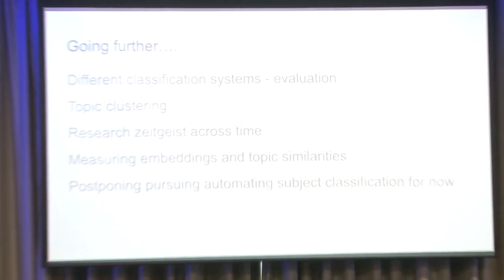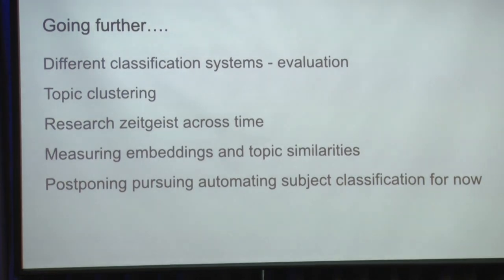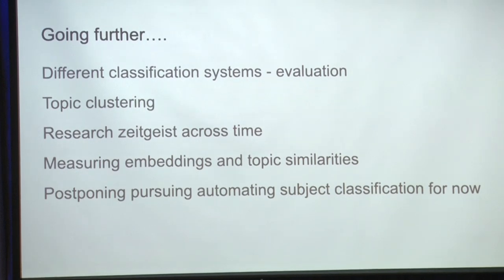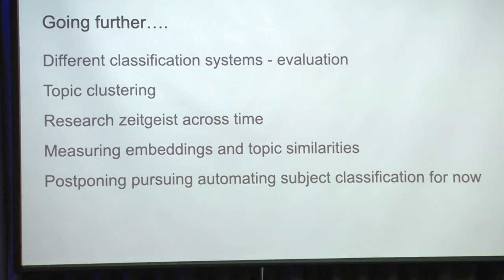Going further, I can see applying these methods on this dataset to see what we can do. We could look at different classification systems to see what we get, and it would be interesting to discuss bias across those systems. Topic clustering is an interesting way to go about this, and we could see how research is flowing across time. We could also look into semantic search — measuring embeddings and how similar they are to other titles to infer subjects. CrossRef is postponing this project for now because we just don't have enough data. That's your whistle-stop tour of these methods.